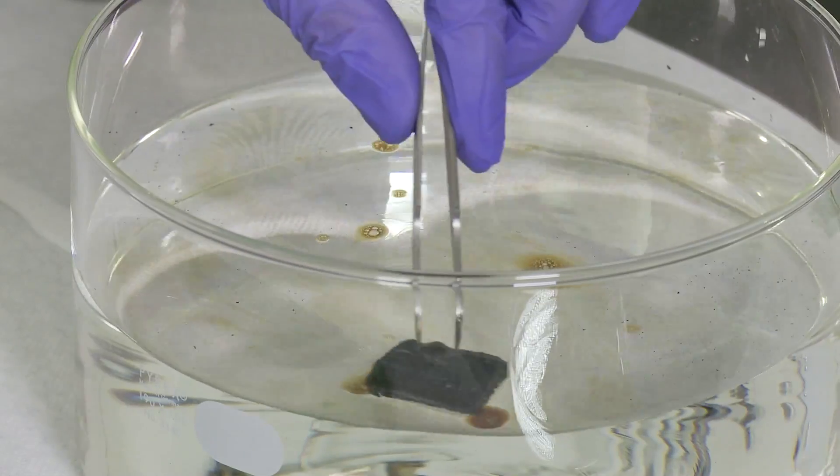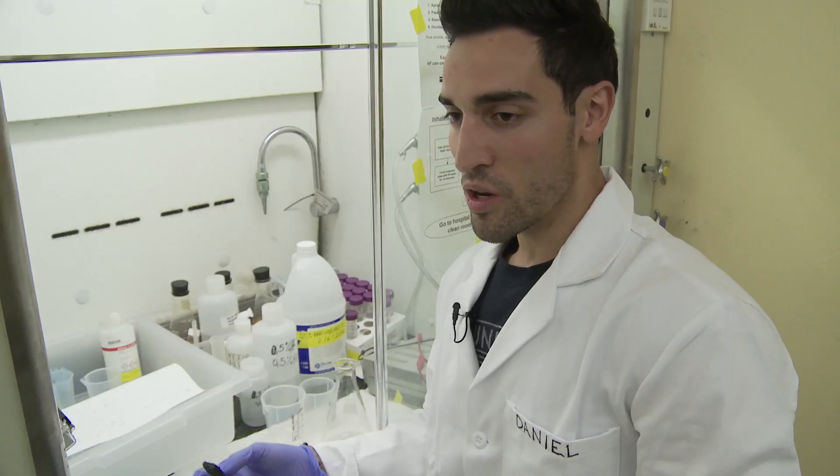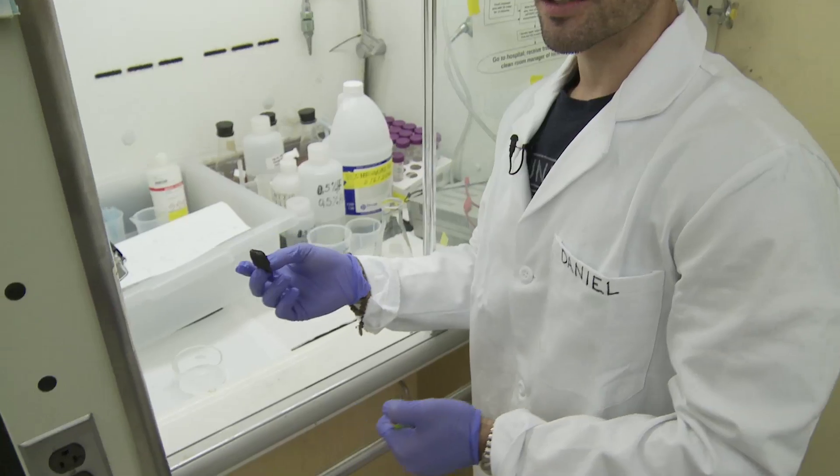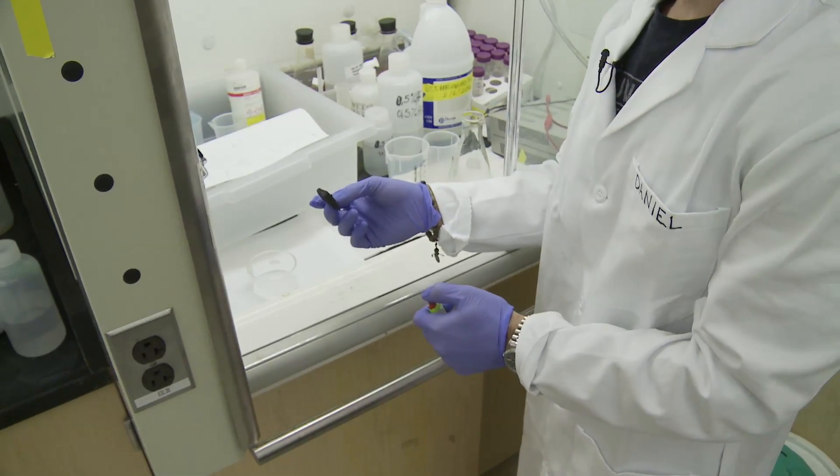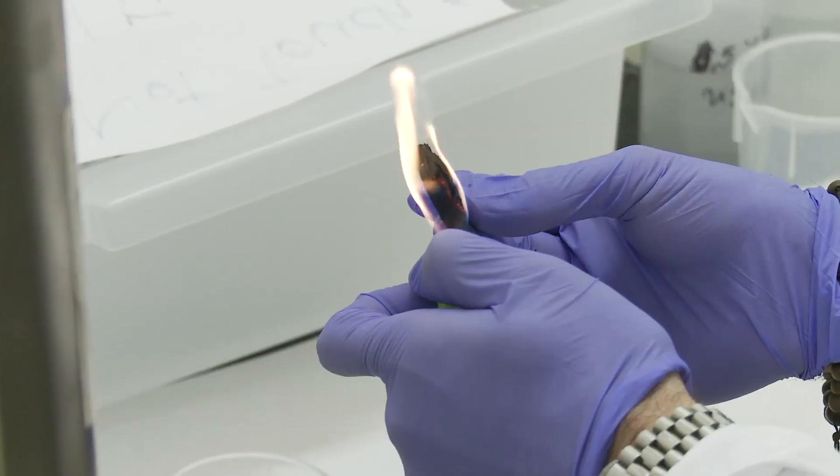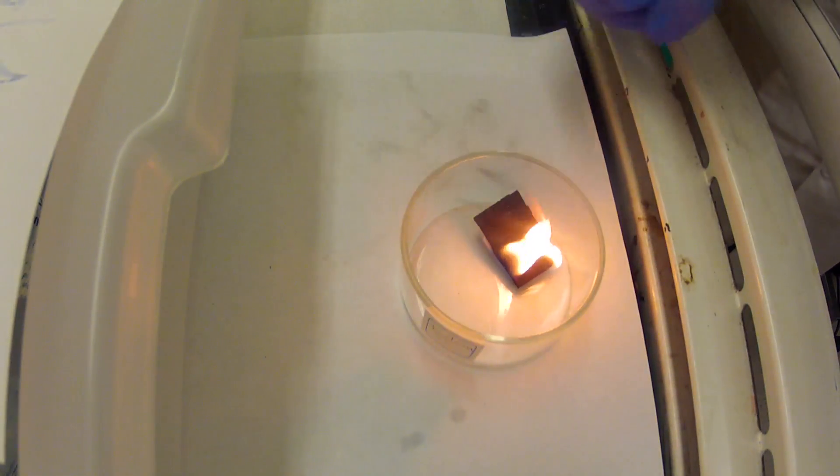After the sponge has been saturated with oil, we can burn it out to salvage the energy. The oil inside is being burned and the carbon nanotube sponge remains intact.